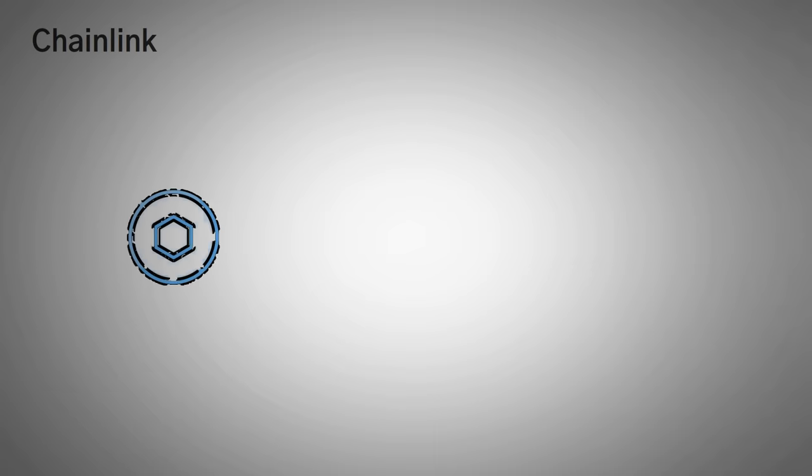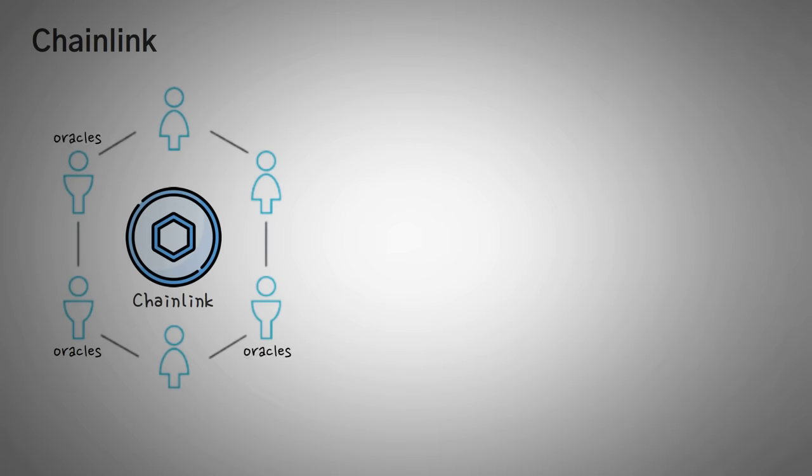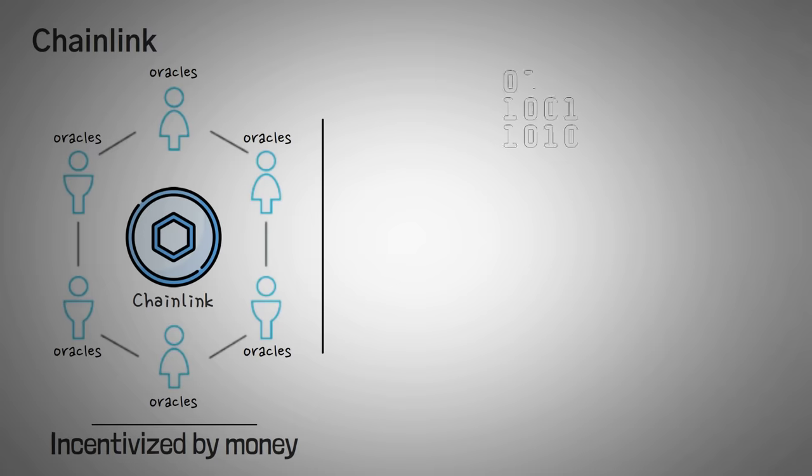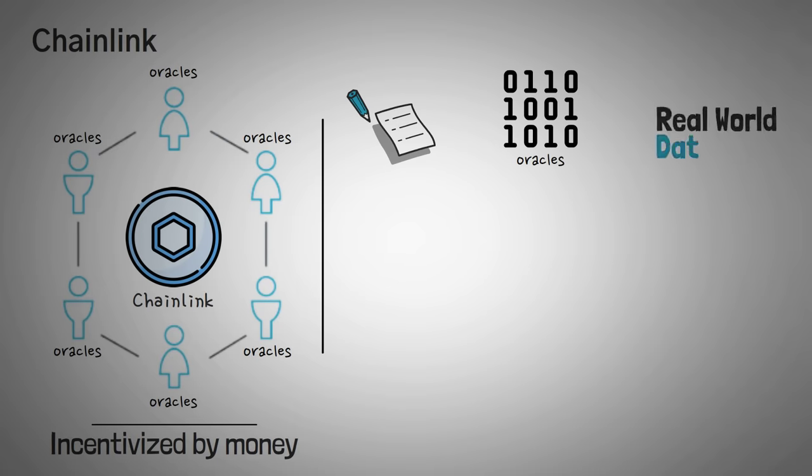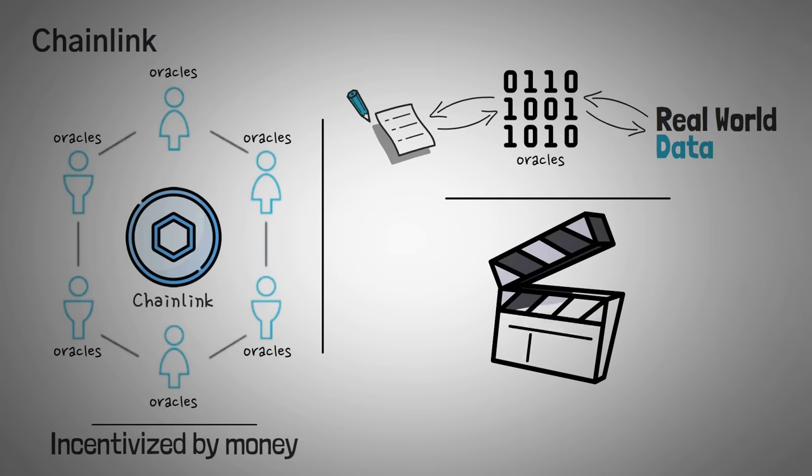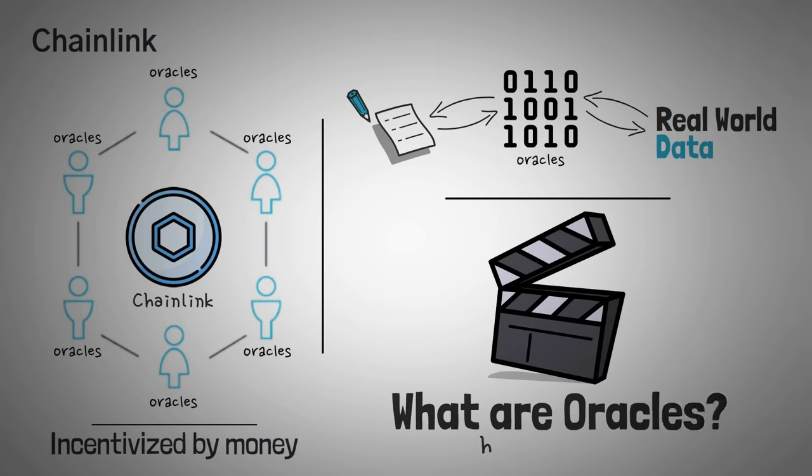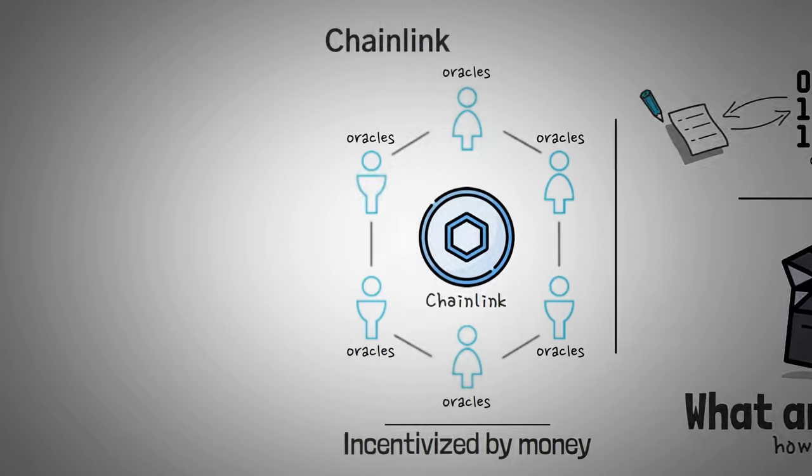Chainlink aims to create a network where data providers, which are also called oracles, are incentivized by money to provide truthful and reliable data to a blockchain. Chainlink is run by oracles, so it's really important that you know what an oracle is. Basically, an oracle is a software that acts as an intermediary, helping to do a two-way data transfer between smart contracts and the real world. We actually have an entire video on what oracles are, so we won't focus too much on how they actually work, but in this video we'll focus specifically on how Chainlink uses them.